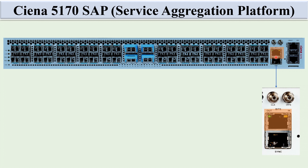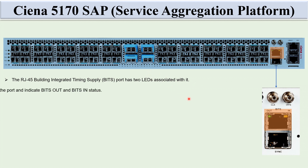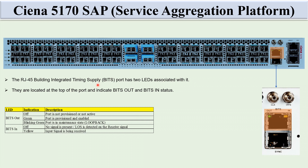The RJ45 BITS (Building Integrated Timing Supply) port has two LEDs: BITS Out and BITS In. For BITS Out: green means the port is provisioned and enabled; off means the port is not provisioned or not active; blinking green means the port is in maintenance state or loopback. For BITS In: off means no signal is present or loss of signal; yellow means an input signal is being received.